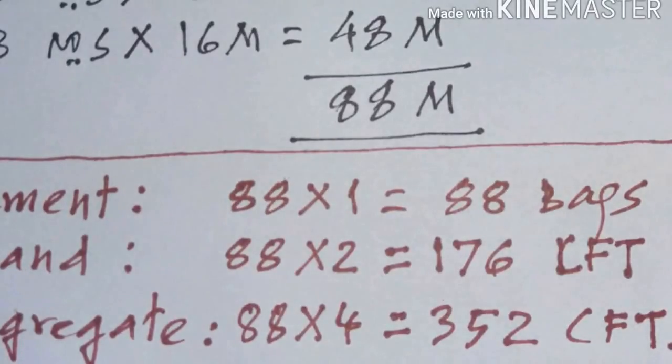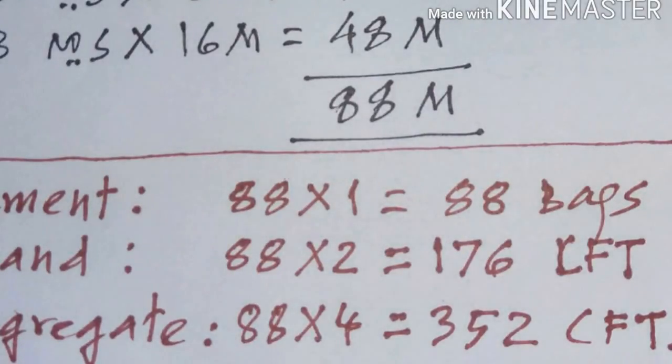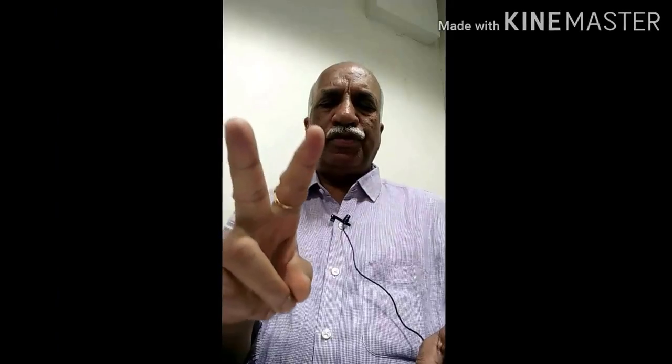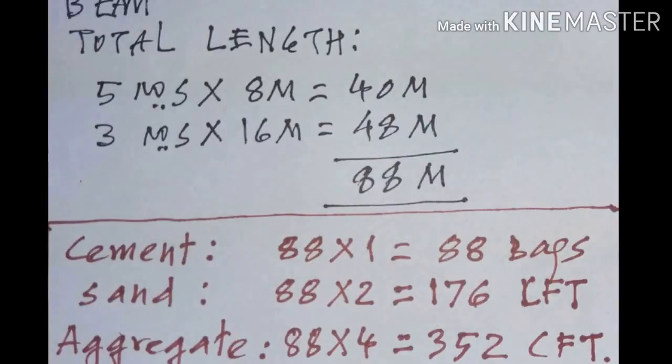...per running meter we need 1 bag of cement, 2 cft of sand, and 4 cft of aggregate. Therefore: cement required is 88 multiplied by 1 equals 88 bags; sand required is 88 multiplied by 2 equals 176 cubic feet; aggregate is 88 multiplied by 4 equals 352 cubic feet.